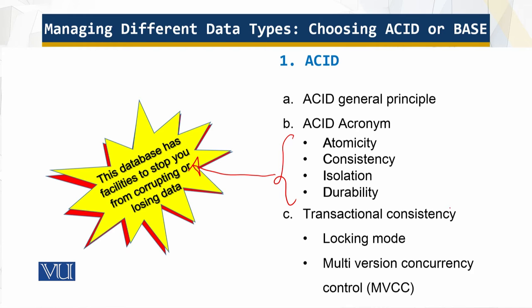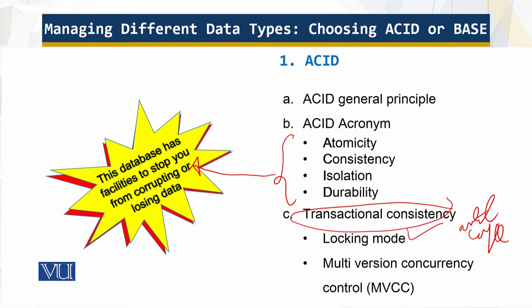What is ACID transactional consistency? In the locking model, you stop data from being read or written on the subset of information being accessed until the transaction is complete — you lock it until complete. An alternative is Multi-Version Concurrency Control (MVCC), which is a way of adding new data without read locking. These approaches have their own benefits and challenges.